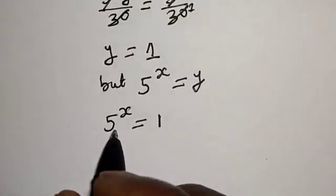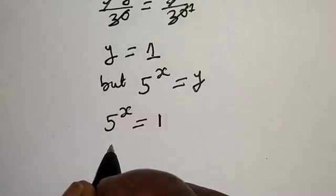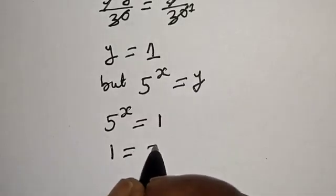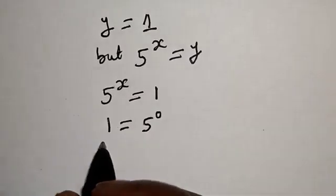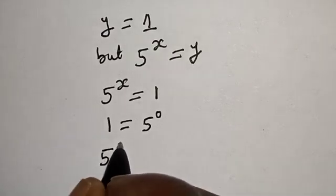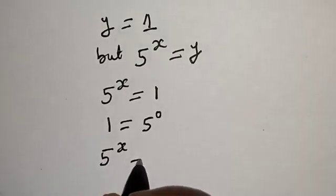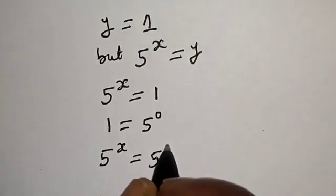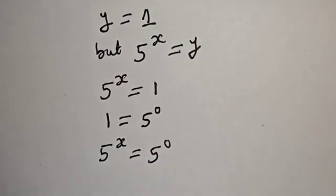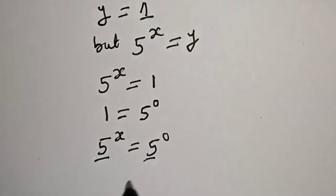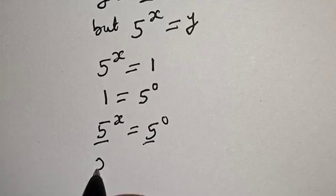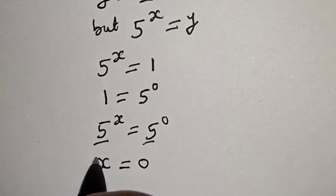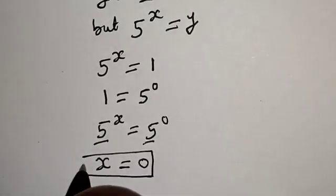We know that 1 is also equal to 5 raised to power 0. Substituting back, we have 5 raised to power x is equal to 5 raised to power 0. Since the bases are the same, therefore x is equal to 0. That is our final answer.